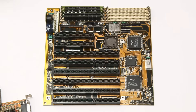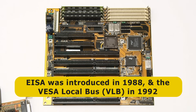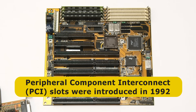As PC technology advanced, ISA slots weren't fast enough for the latest graphics and other cards. Therefore an extended version of ISA called EISA was introduced in 1988, as well as an interface called the VESA Local Bus, or VLB, in 1992. However, neither of these became that popular, as in 1992 we also saw the introduction of the Peripheral Component Interconnect, or PCI, expansion slot.